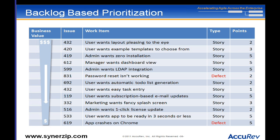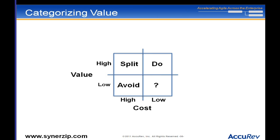I can look at all the stuff in my backlog and say some are high value, some are low value, some are high cost, some are low cost. For example: one story is very high value, another is low value, and they're both low cost — which one should I do? Clearly the one with high value and low cost. But then it gets more complicated.